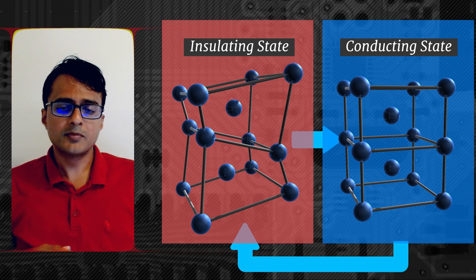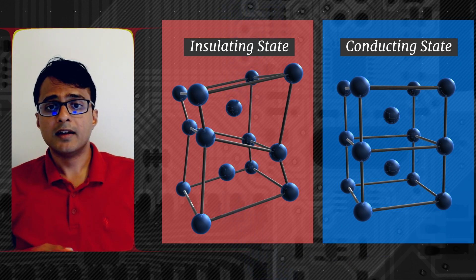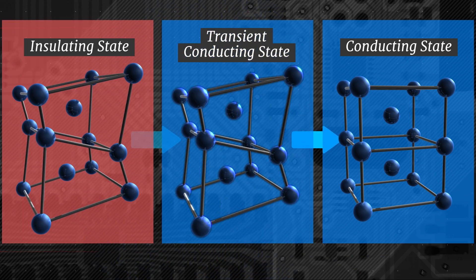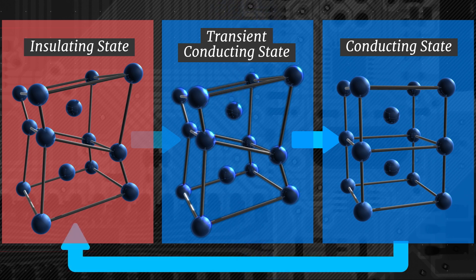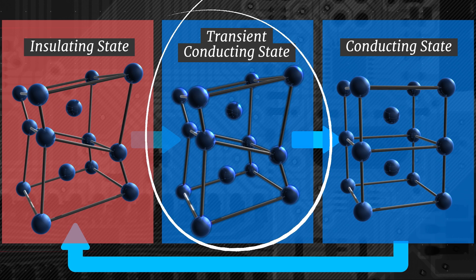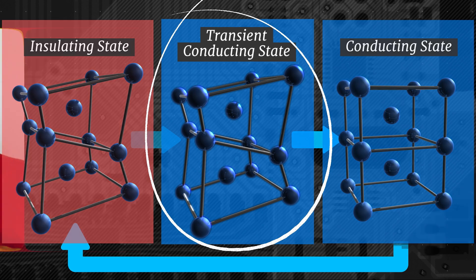We find that when these materials are electrically shocked, they can go from being insulating to conducting, but without any of the atoms actually having to move. This is a new form of this material that does not exist naturally, and is created inside the switches in our experiments.